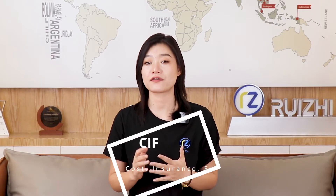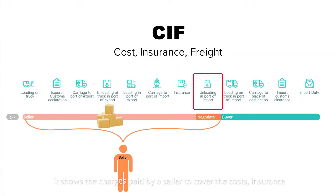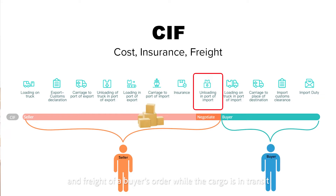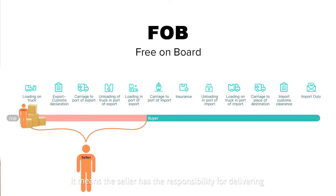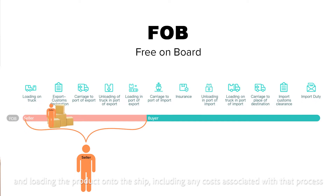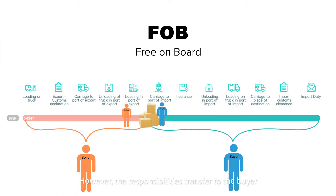Number three, CIF — Cost, Insurance, and Freight. It shows the charge paid by a seller to cover the costs, insurance, and freight of a buyer's order while the cargo is in transit. Number four, FOB — Free on Board. It means the seller has the responsibility for delivery and loading the products onto the ship, including any costs associated with that process. However, the responsibility is transferred to the buyer once the goods have been loaded onto the ship.